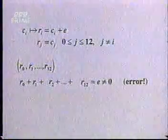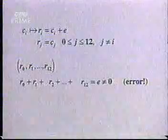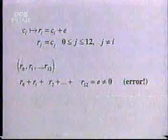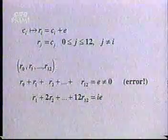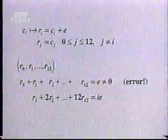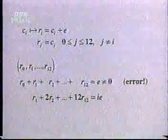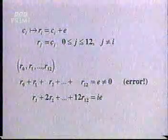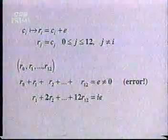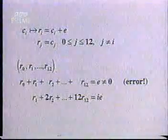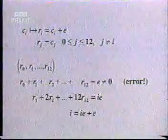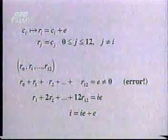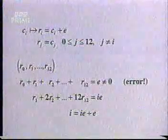The second calculation, R1 plus 2R2, et cetera, yields i times E, since the error in position i was E. Now since division is possible with these symbols, we can divide the second by the first, finding the number i. That is to say, we have the magnitude of the error and the location of the error, and we can thus correct.